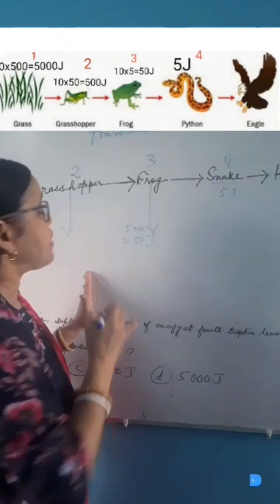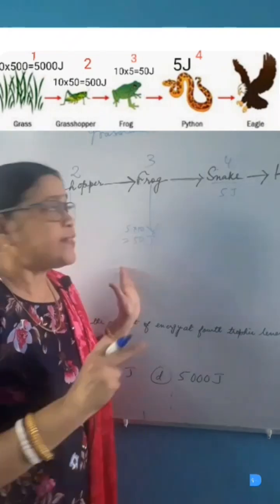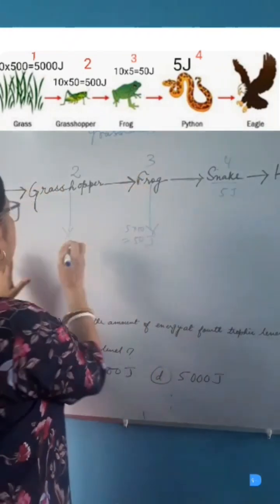Again, the 2nd trophic level will have 10 times more energy than at the 3rd trophic level, 500 Joules.